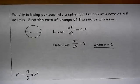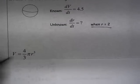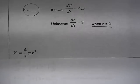So we set up the relationship between the variables. So we have V equals 4/3 π r cubed. And then we take the derivative of both sides of that with respect to time.